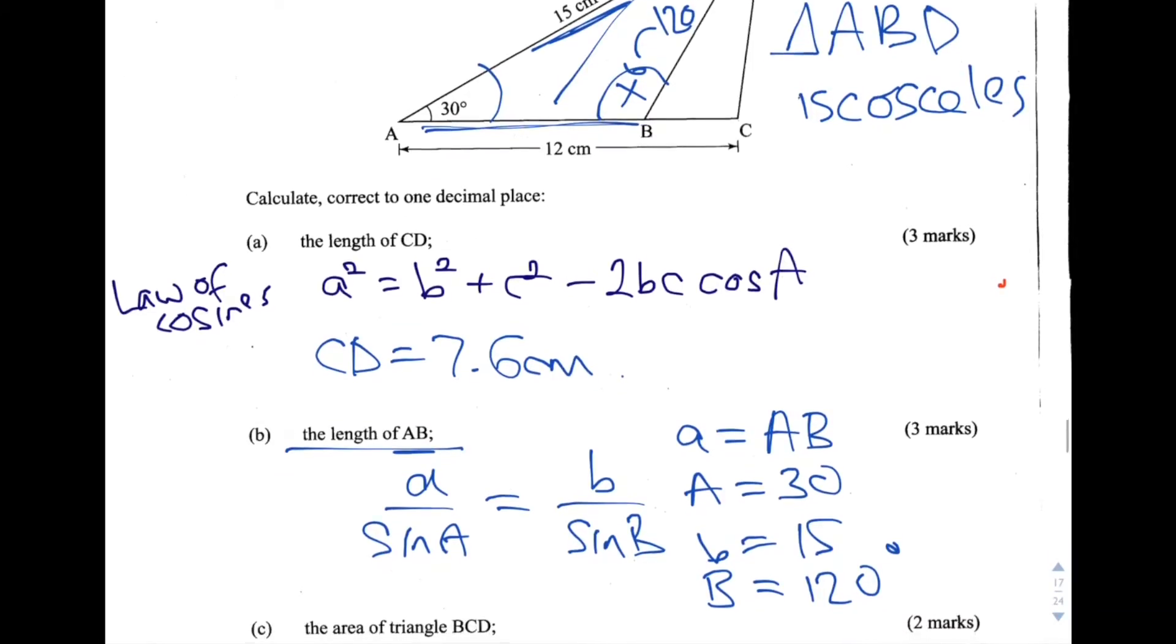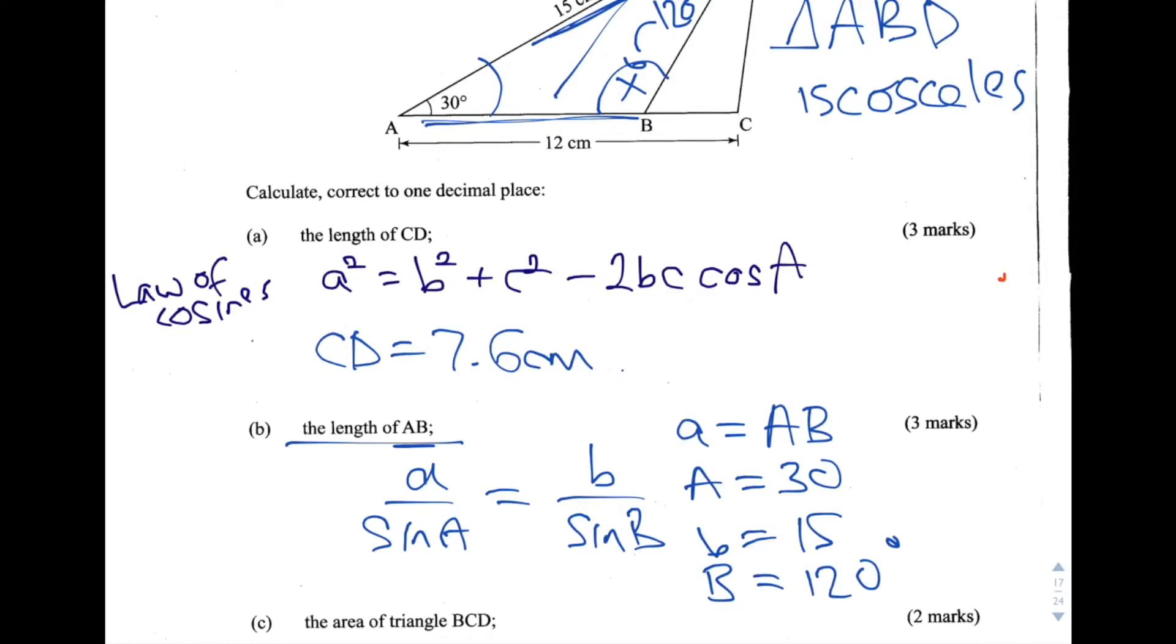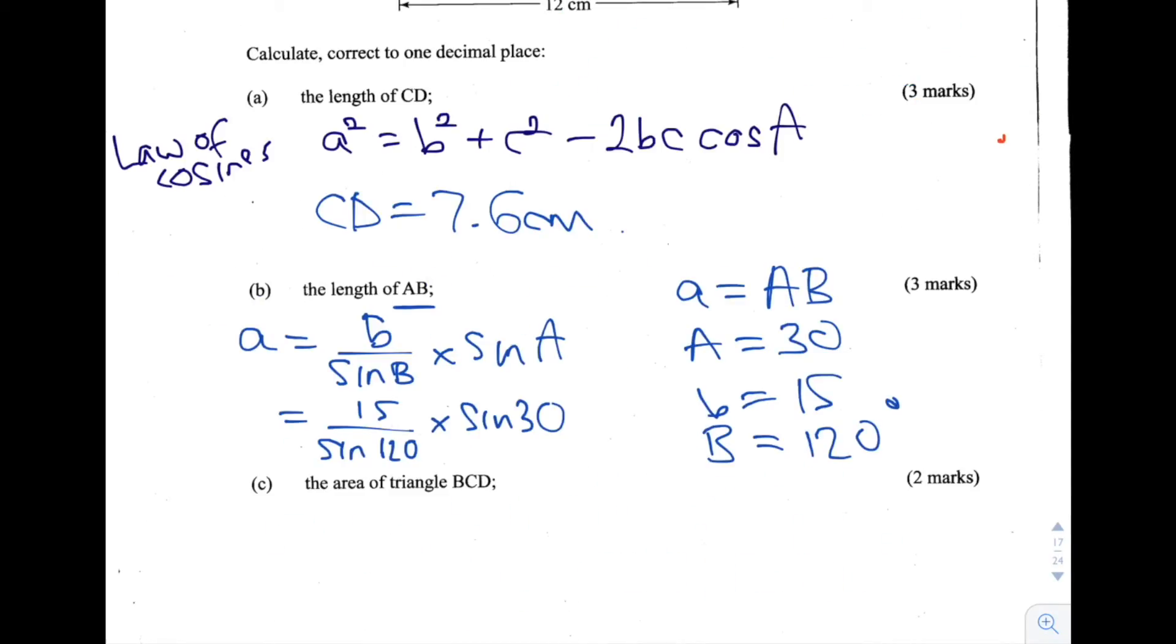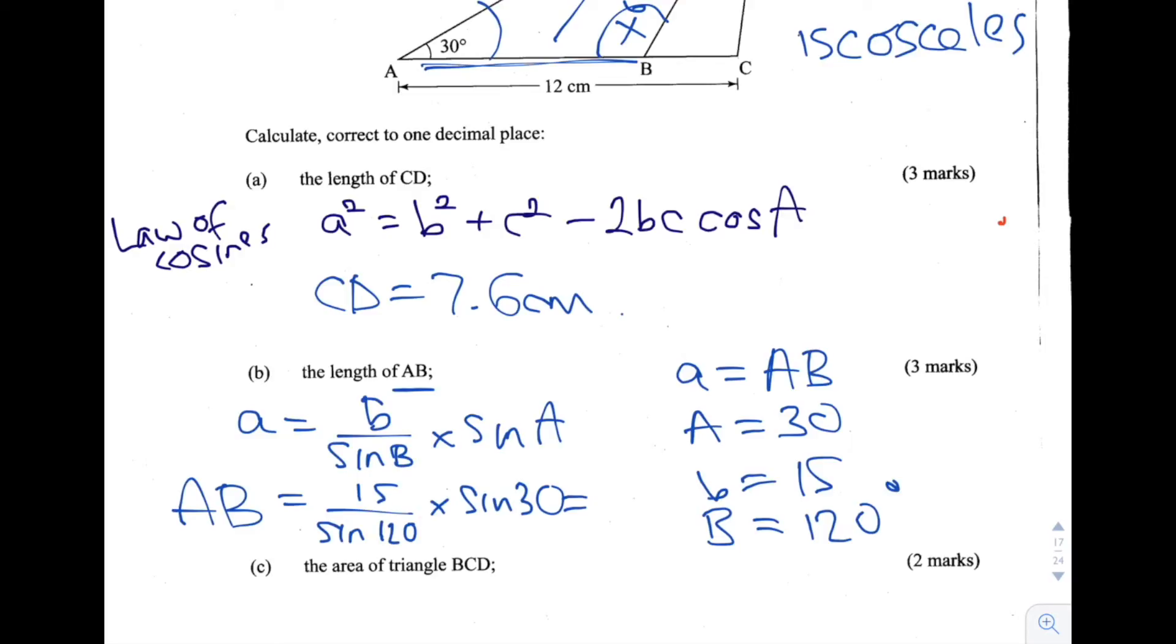So let's calculate what A is. To calculate A, we need to rearrange this equation to make A the subject. We do that by multiplying by sine A on both sides. What we get is A equals B over sine B multiplied by sine A. Then we substitute in the values. So we get 15 divided by sine 120 multiplied by sine 30. When we put this into the calculator, we get the answer AB equals 8.660254 or 8.7 centimeters to one decimal place.